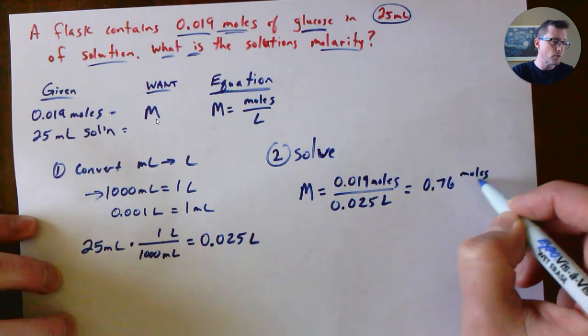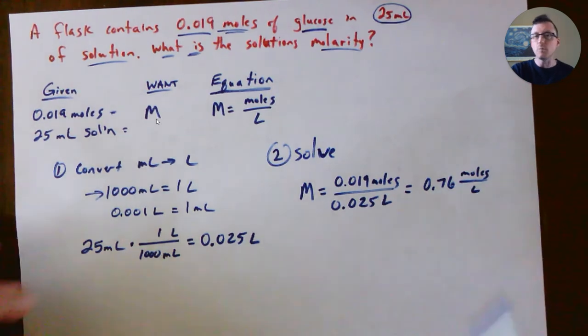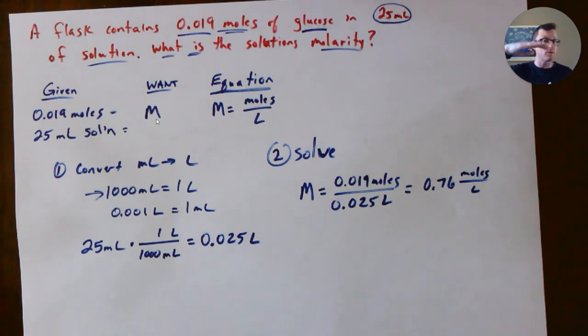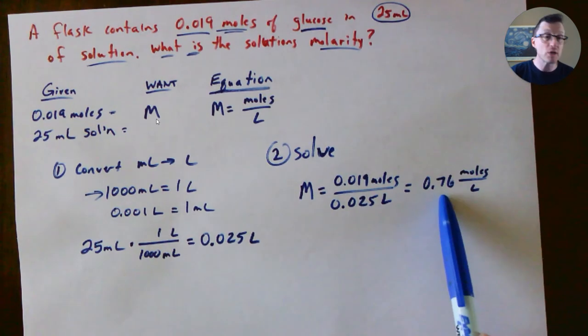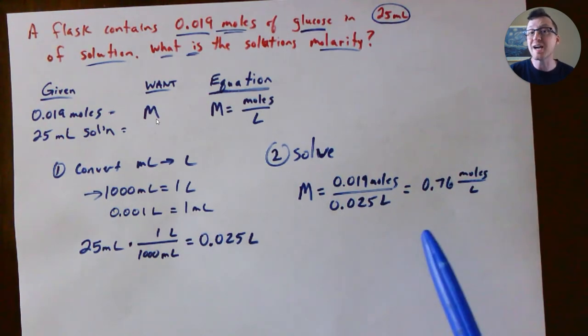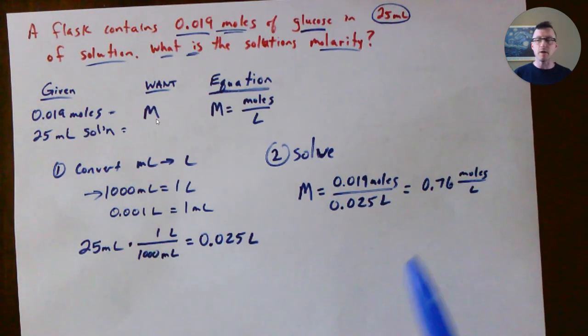What this is saying to us is if we scaled this up to one whole liter, like half of a two-liter bottle of pop, that's how many moles of glucose would be in there. That's your concentration. The bigger this number, the more concentrated it is.